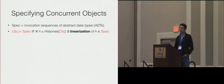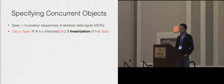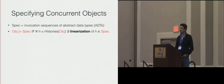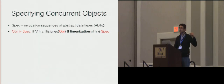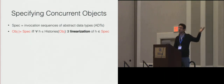If we talk about concurrent objects, whether a behavior is correct is typically understood in terms of invocation sequences of abstract data types, meaning that we will say that the history of an object is valid if it has a linearization which is admitted by an abstract data type. Taking exactly this definition also works for sequential objects — there the linearization will always coincide with the history itself, so it reduces to an inclusion.